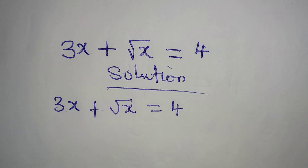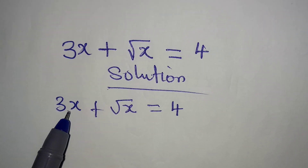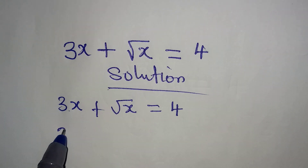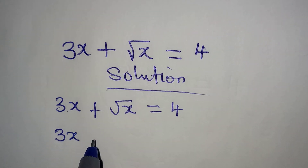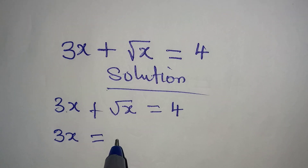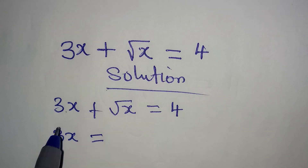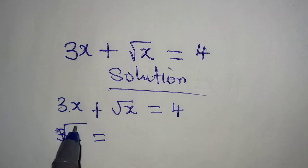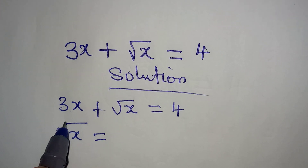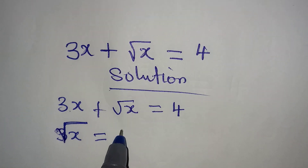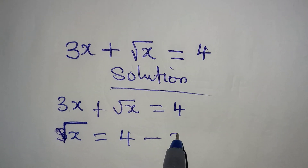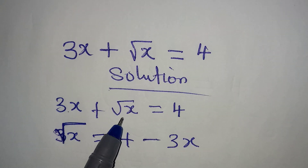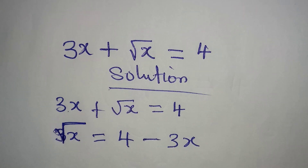We cannot add these two because they are not the same thing, but we can take 3x to the other side. So square root of x will be equal to 4 minus 3x.